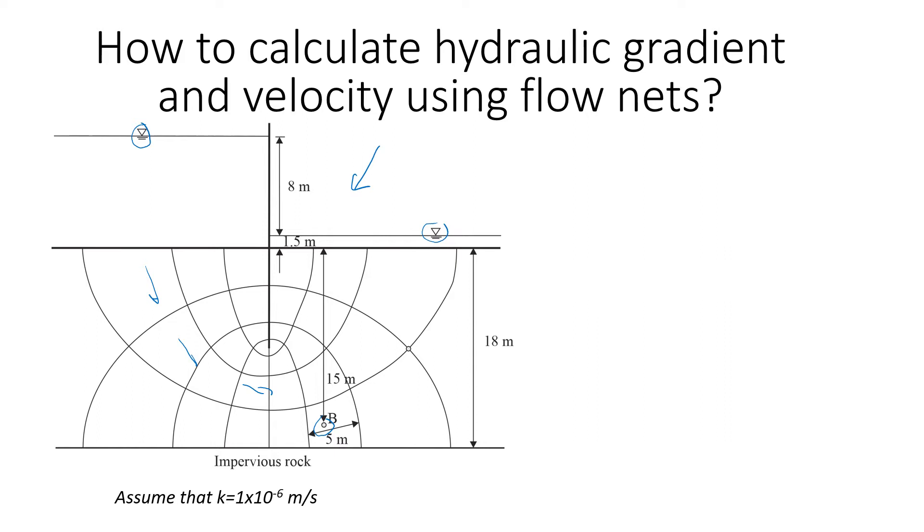To start with, we would just find h, the difference in water levels that will cause water seepage underneath this engineering structure. As I told you before, we need to look for two water levels, level one and level two. The difference between these two water levels will give us h. In this case, it's going to be 8 meters.